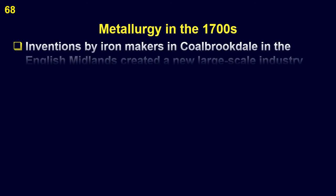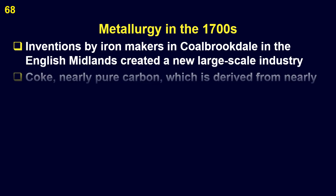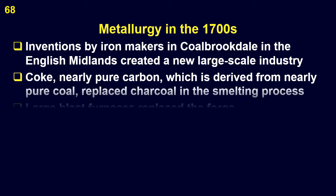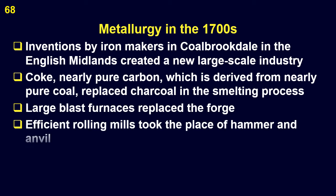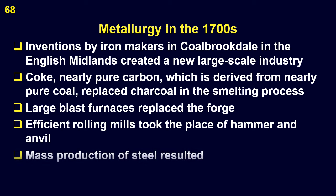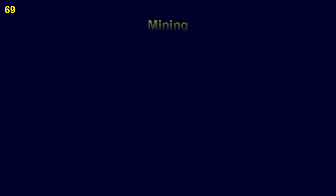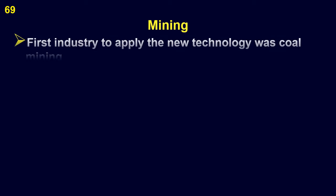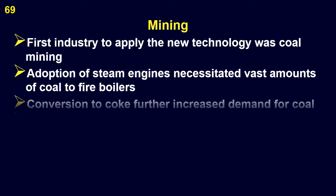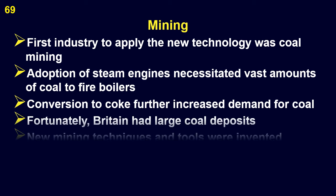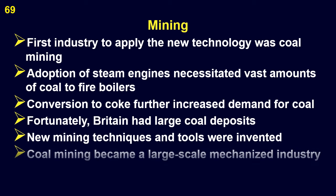Metallurgy in the 1700s. Inventions by iron makers in the Coalbrookdale region of the English Midlands created a new scientific, large-scale industry. Coke — nearly pure carbon derived from nearly pure coal — replaced charcoal in the smelting process. Large blast furnaces replaced the forge, efficient rolling mills replaced hammers and anvils, and mass steel production resulted. Coal mining was the first industry to feel the effects of the new technology. The adoption of steam engines necessitated vast amounts of coal to fire boilers, and the conversion to coke further increased the demand for coal. Fortunately, Britain had large coal deposits, and new techniques and tools were invented as coal mining became a large-scale mechanized industry.